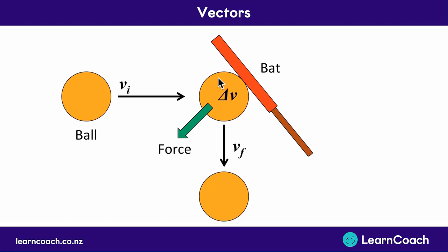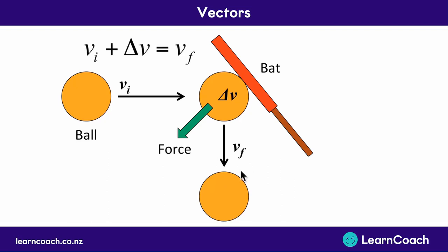This change in velocity came from the bat hitting it in the bottom-left direction — the same direction as the force. We're going to look at the relationship between this change in velocity, the initial velocity, and the final velocity. In a nutshell, you have an initial velocity, it changes, and then you have a final velocity. That's what this first formula is showing: your initial velocity plus your change equals your final velocity.